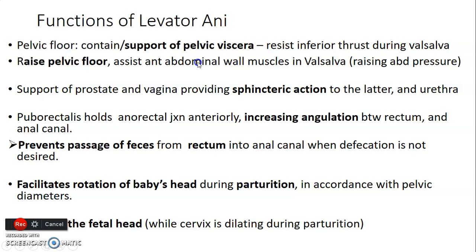Levator ani gives support to pelvic viscera and raises the pelvic floor. During Valsalva maneuver — such as coughing or sneezing where there is raised abdominal pressure — levator ani helps raise the pelvic floor to support increased abdominal pressure. It also supports the prostate and vagina and provides sphincteric action. Puborectalis holds the anorectal junction anteriorly, increasing the angle between rectum and anus, which prevents defecation when not desired. Additionally, levator ani facilitates rotation of the baby's head during parturition.